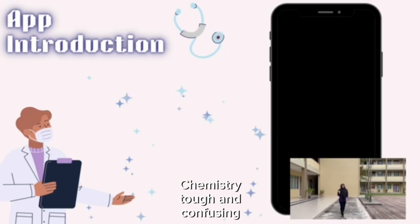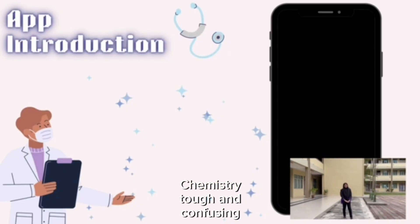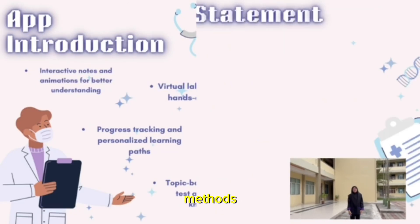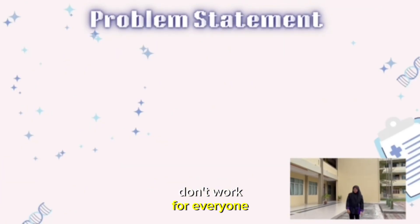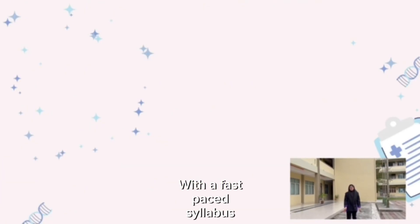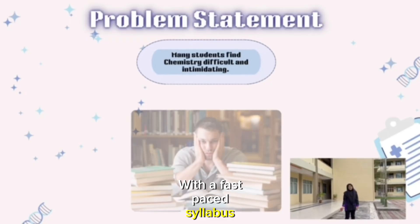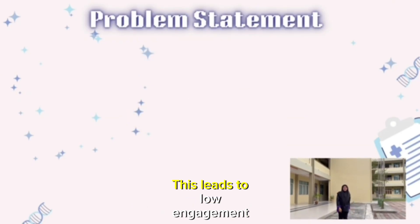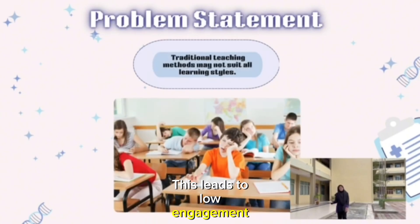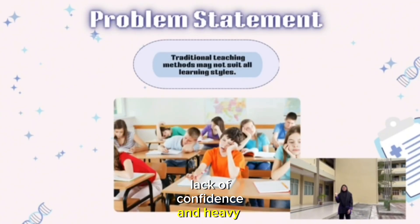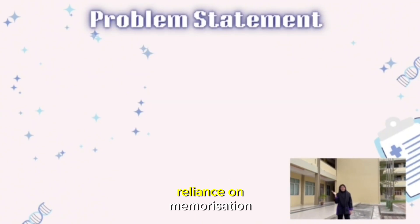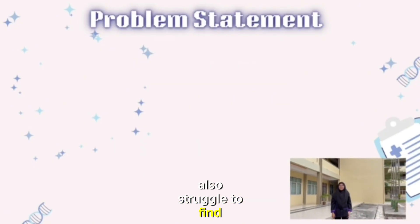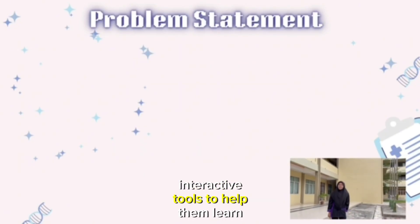Most students find chemistry tough and confusing. The concepts are often abstract and traditional teaching methods don't work for everyone. With a fast-paced syllabus, there is little time to really understand the subject. This leads to low engagement, lack of confidence, and heavy reliance on memorization. Outside of class, students also struggle to find interactive tools to help them learn.